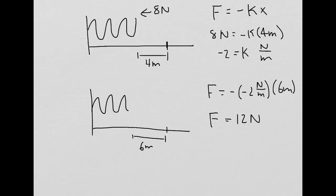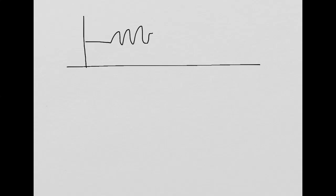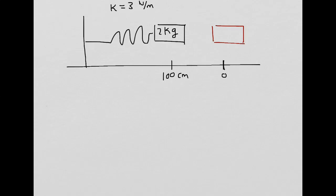Let's now look at a slightly harder example. I've got a spring attached to a wall with a block attached to it. The block has a 2 kilogram mass, and the spring has been compressed a distance of 100 centimeters. The equilibrium point is at zero. The spring constant is 3 newtons per meter. I want you to find the velocity of the block after the spring is released and reaches the equilibrium point.